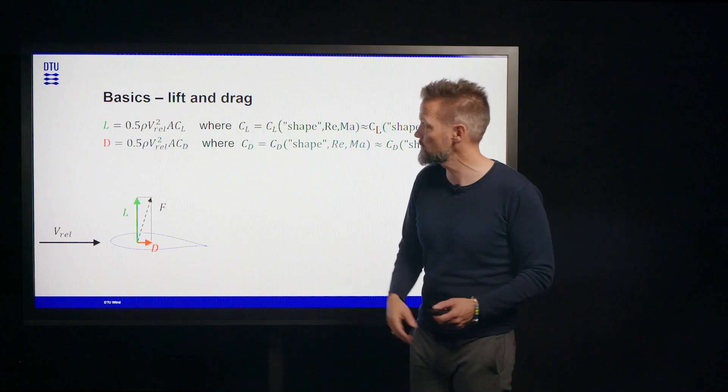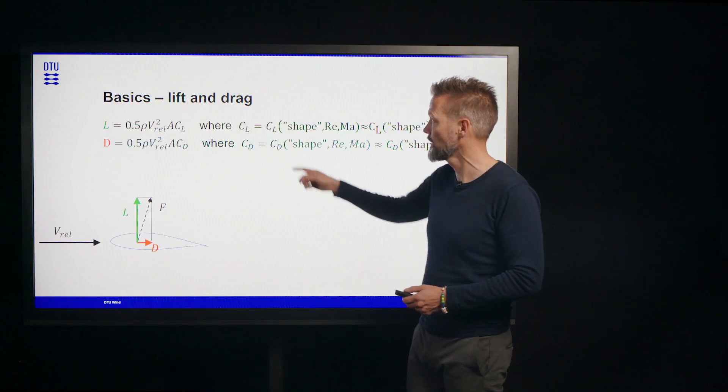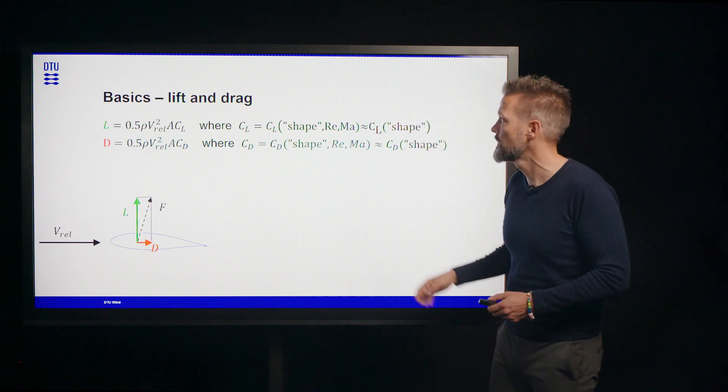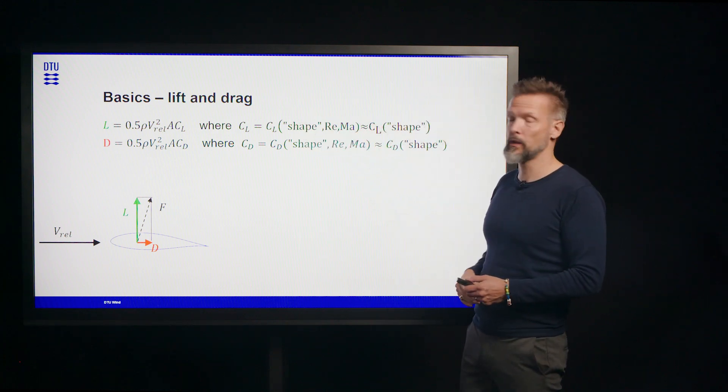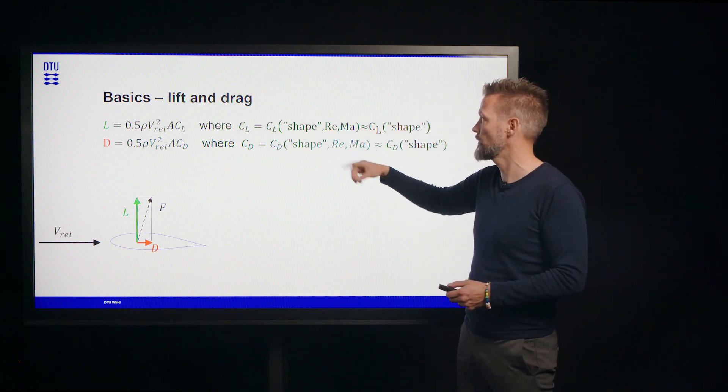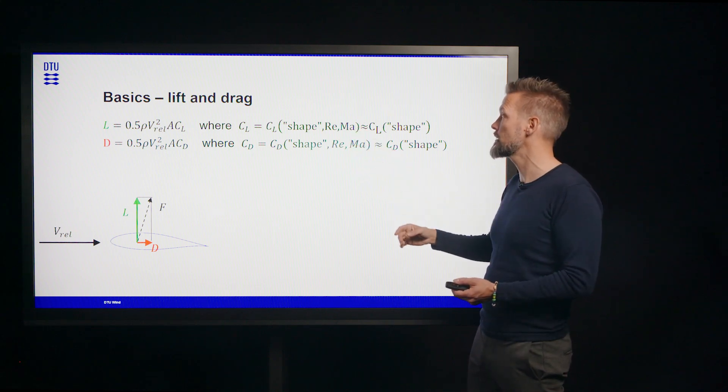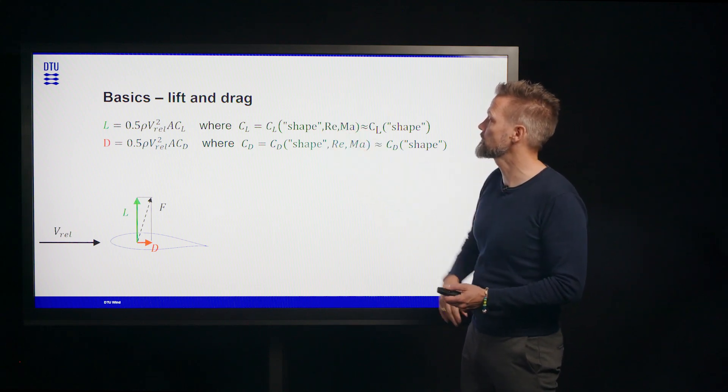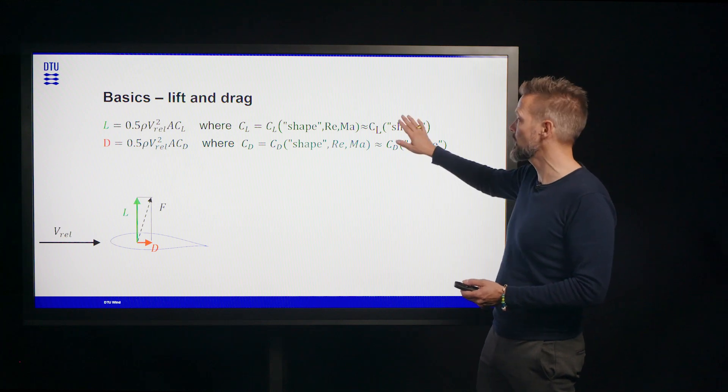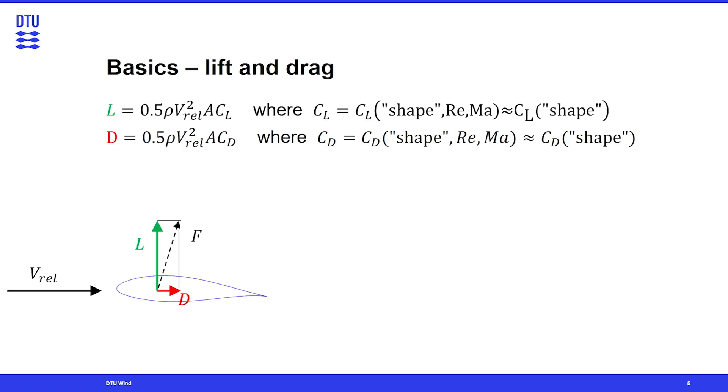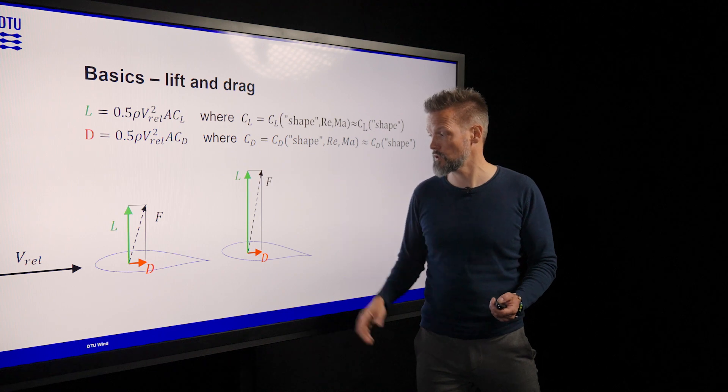And then you can show with dimensional analysis that these lift and drag coefficients depend on really three things. They depend on shape, Reynolds number, Mach number. But for our applications the dependency on Reynolds number and Mach number is very weak so they actually only depend on the shape. And then by shape I also mean the shape relative to the wind speed. So when you change the orientation, forces change.